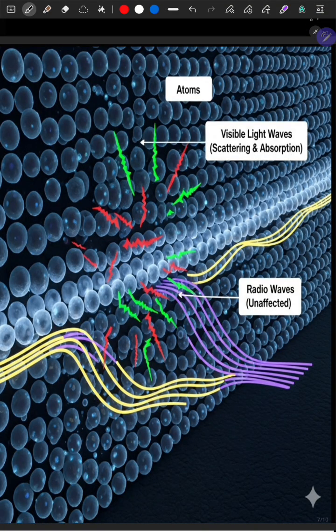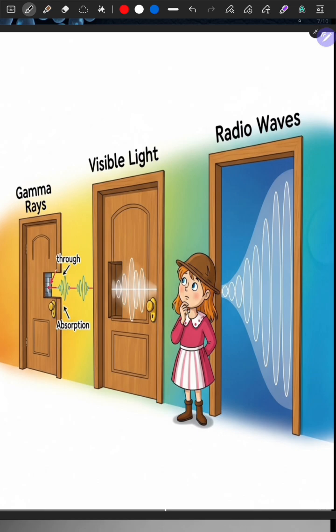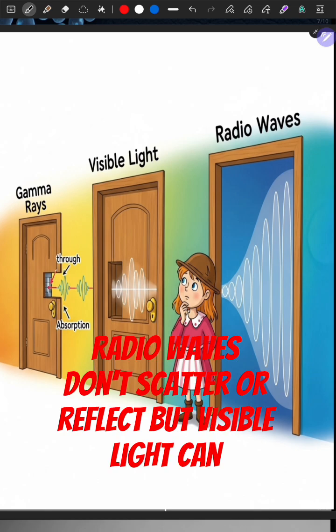It's like Goldilocks: only waves of just the right size for visible light get blocked. Too big, too small, or just right.